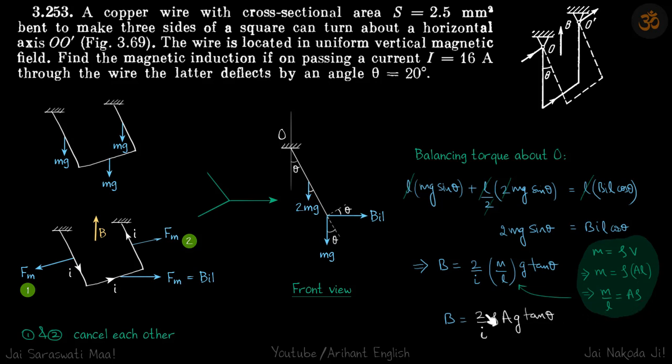Our answer is B = (2/I)ρAg tan(θ). Since ρ is not given in the question, you can assume it for copper.